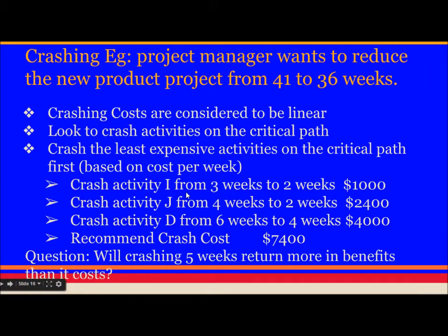I have identified three activities with the least cost. Crash activity I from 3 weeks to 2 weeks at a cost of $1,000. Crash activity J from 4 weeks to 2 weeks at a cost of $2,400. Crash activity H from 6 weeks to 4 weeks at a cost of $4,000. The total recommended crash cost is $7,400. The next question to ask is: will crashing 5 weeks return more in benefit than in cost? We must do a cost-benefit analysis before moving forward with crashing.